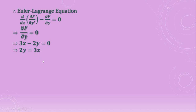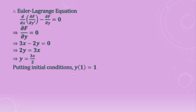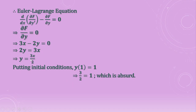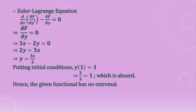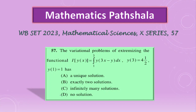Setting 3x minus 2y equal to zero gives y equals 3x/2, which is the only extremal of the given functional. Now applying the initial condition y(1) equals 1: substituting x equals 1 and y equals 1 into this extremal gives 3/2 equals 1, which is absurd. Hence the given functional has no extremal satisfying these initial conditions, so it has no solution. Option D is the correct answer.